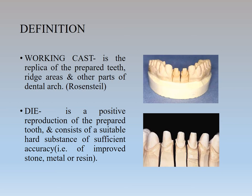Starting with the definition of a working cast. The whole structure is known as a working cast, and the individual pieces that we cut are known as dies. The working die is the replica of a prepared tooth, rich areas, and other parts of the dental arch. This definition is according to Rosenstiel, the standard textbook of FPD.